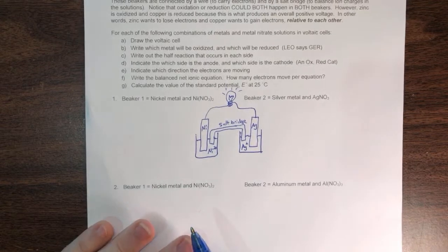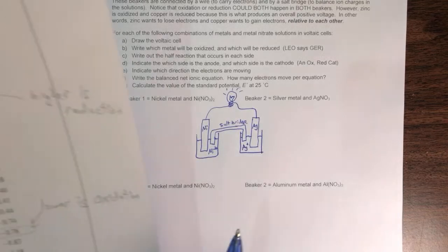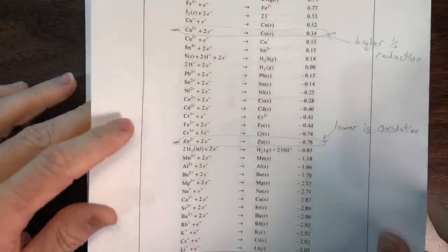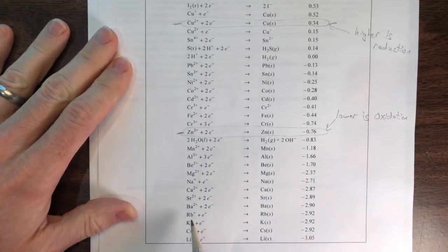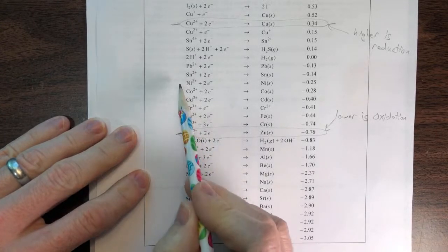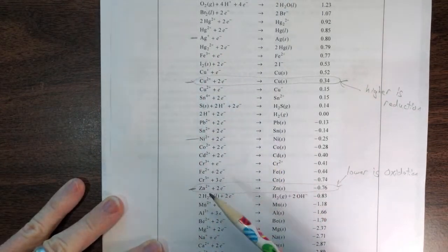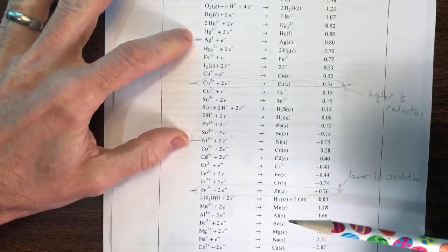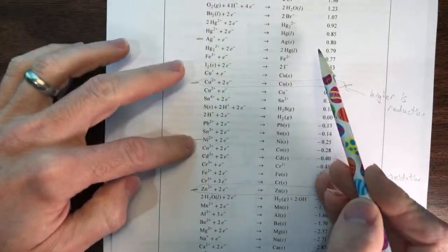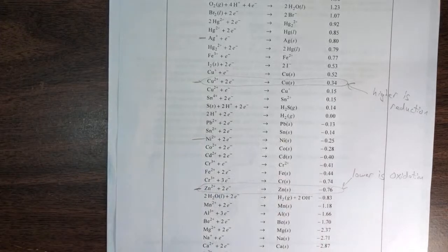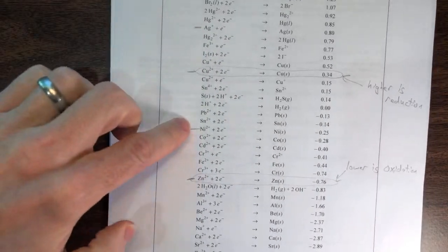And then we have a wire and some device we're going to power — a light bulb. Now let's analyze the voltaic cell: which will be oxidized, which will be reduced? We've got to find everything on the table. We have nickel and we have silver. Silver is higher up on the table, and in general whichever one is higher will be the one that's reduced, and the one that's lower will be oxidized. So based on the fact that silver is higher, silver is going to be reduced and nickel will be oxidized.